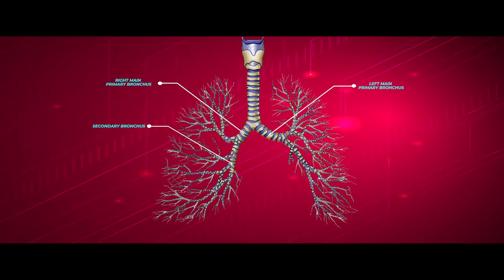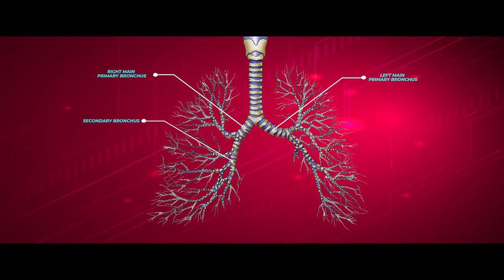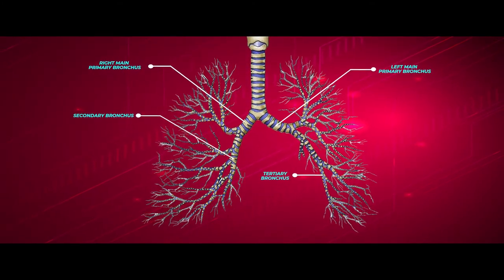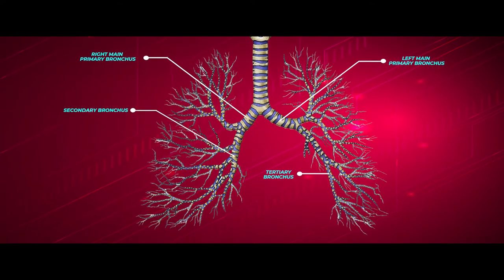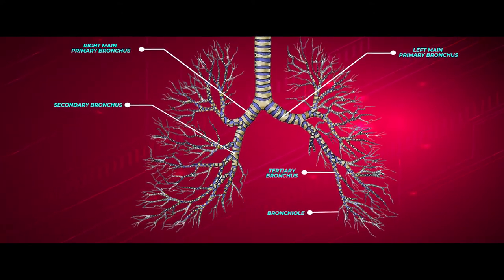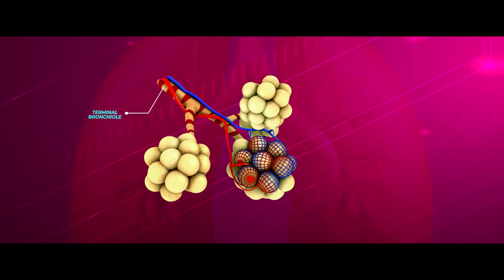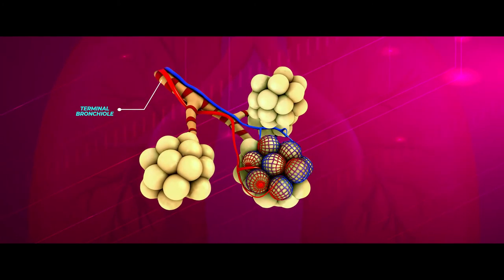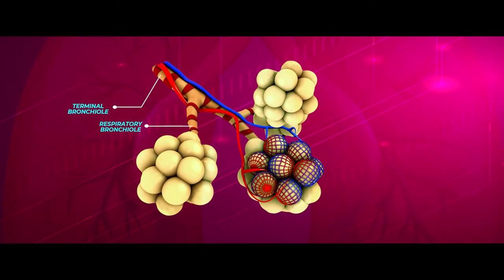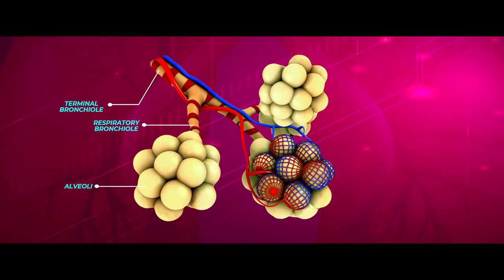The secondary bronchi then branches into many tertiary bronchi that repeatedly branch further resulting in tiny bronchioles. The bronchioles continue to branch to form terminal bronchioles which ultimately divide into even smaller respiratory bronchioles that end in clusters of alveoli.